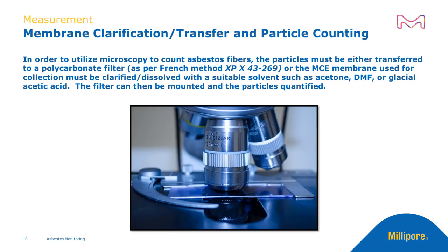In order to count asbestos fibers via microscopy, the particles must either be transferred to a polycarbonate filter, as per the French method XPX 43269, or the MCE membrane used for collection must be clarified or dissolved with a suitable solvent such as acetone, DMF, or glacial acetic acid. At this point, the filter can then be mounted and the particles quantified.